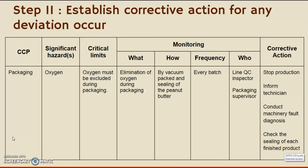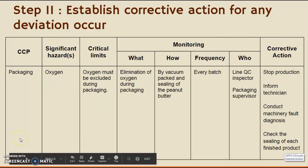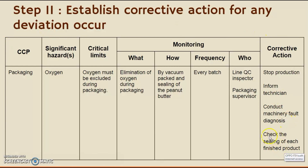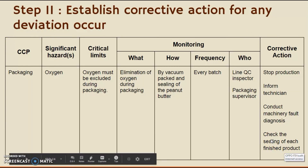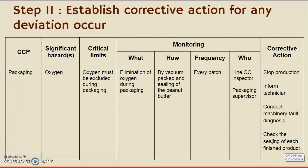Our last critical control point is packaging, and the significant hazard is oxygen. The inclusion of oxygen in our packaged product can lead to lipid oxidation of the peanut butter spread. The corrective actions are to stop the packaging process, inform the technician, and conduct machinery fault diagnosis, as the filling process uses machinery. Once production is stopped, we should check the sealing of each finished product to ensure every product is properly sealed, preventing any possible inclusion of oxygen gas into the packaging, as it will affect the peanut butter spread.